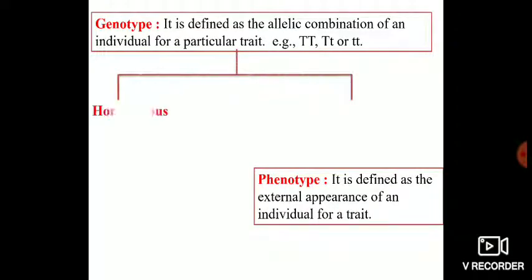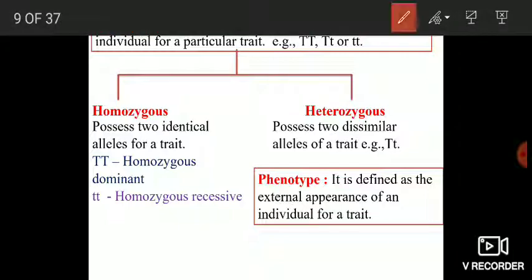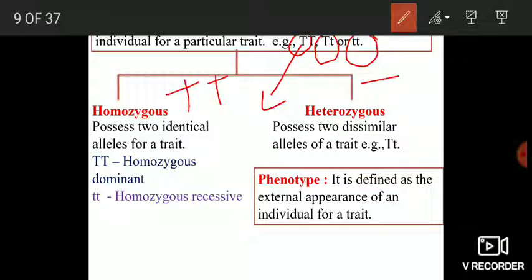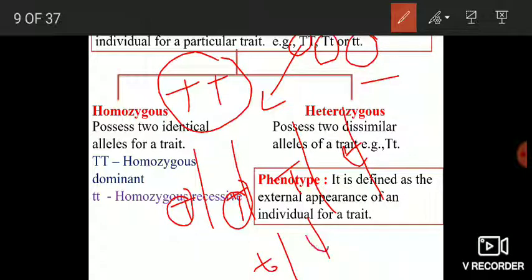Another important term is genotype. Genotype is defined as the allelic combination of an individual for a particular trait. For example: TT, Tt, or tt. This is the allelic combination of an individual for a particular trait — on the homologous chromosomes you have allele T on one chromosome and allele T on another, or you may have capital T and small t, or small t and small t.